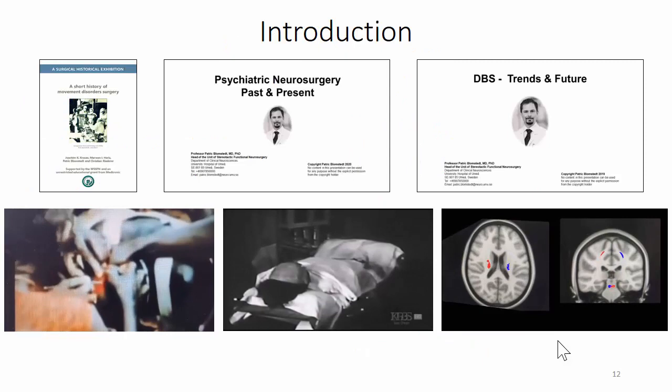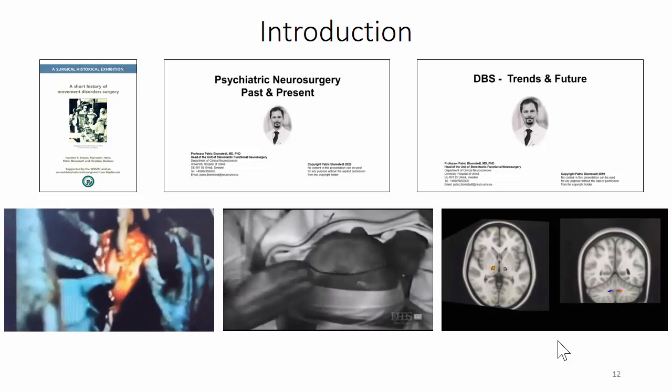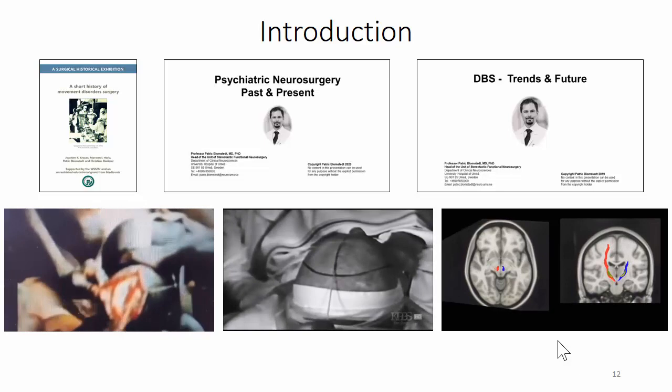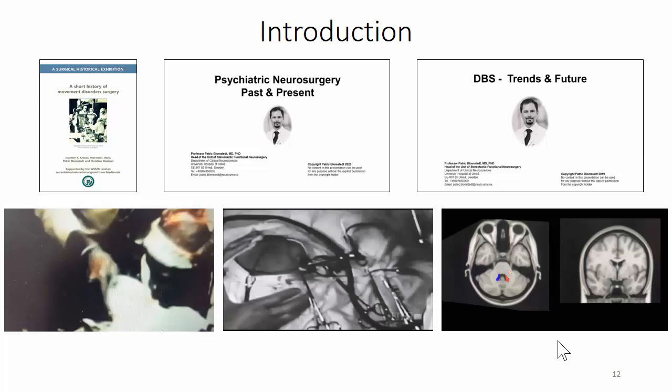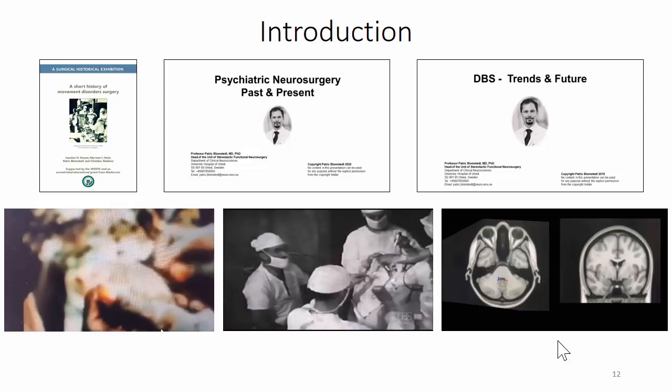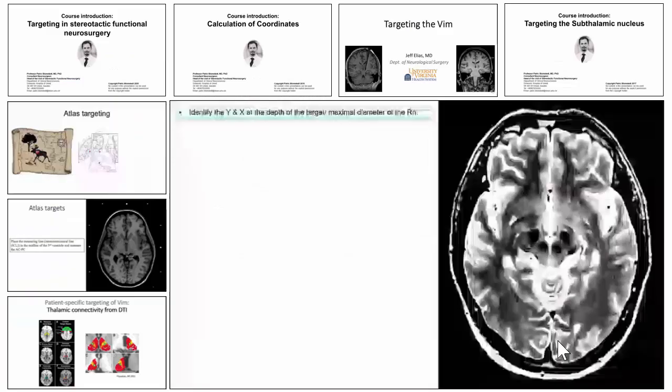The course is divided into four parts. In the first lectures, you will get a historical background as well as an overview of the current state and trends regarding the future of stereotactic neurosurgery. This is not something you need to know in detail, but it is quite interesting and something you should have an understanding of as a neurosurgeon.